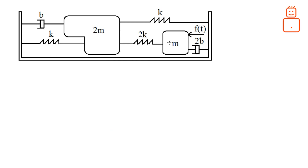Let's start. We have this dynamic system where we have two blocks M and 2M. The input to the system is F of T, which affects block M. Block M is also affected by a spring and a damper. Block 2M has forces from three springs and a damper affecting it.